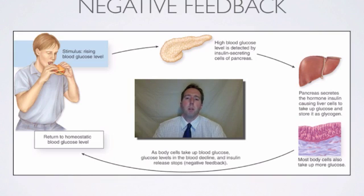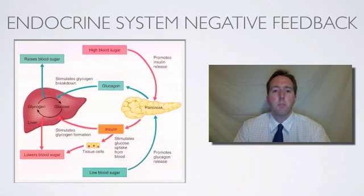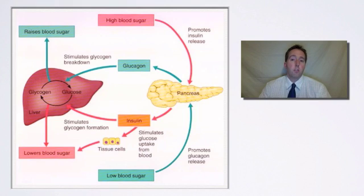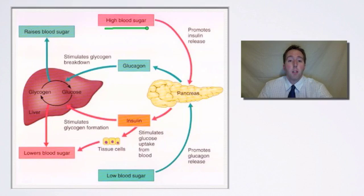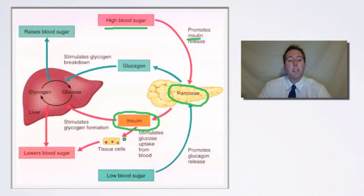Of course, sometimes blood glucose is too high, but sometimes it's too low. In reality, there are two hormones that work together to maintain homeostatic levels of glucose in the blood. We just went through the insulin example — that's a stimulus-response model. If the stimulus is high blood sugar, insulin is released from the pancreas. The pancreas is the receptor — it detects that there's too much sugar in the blood, releases insulin, and then it targets effectors, which in this case are tissue cells and the liver.